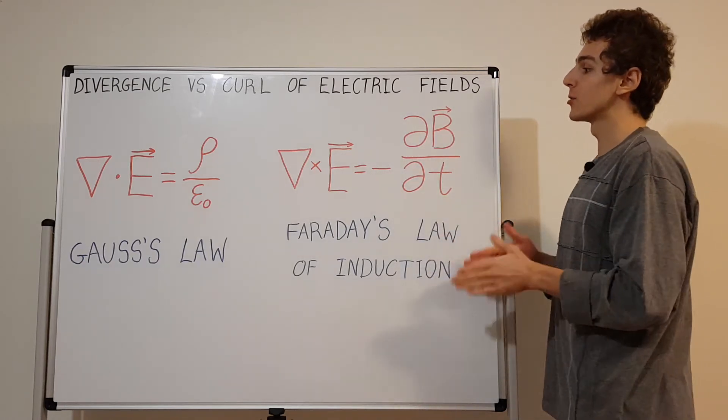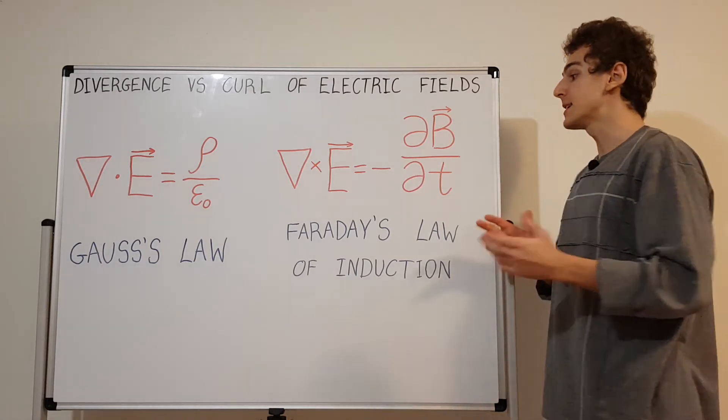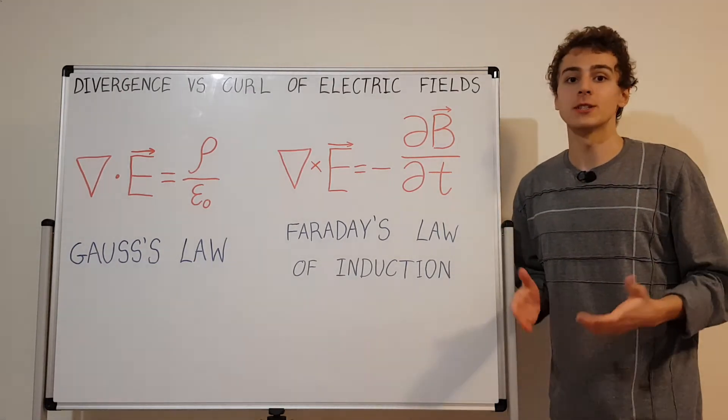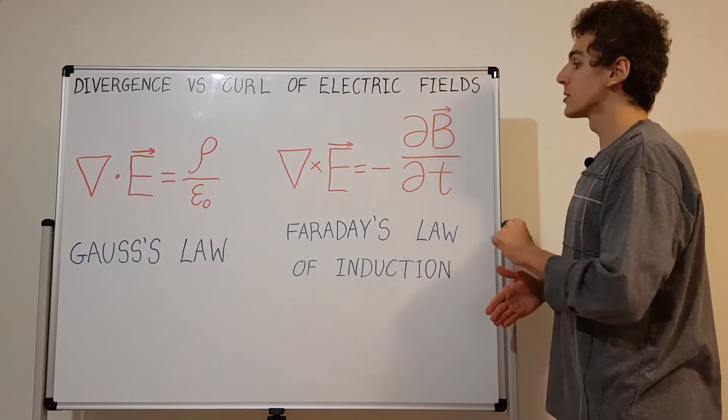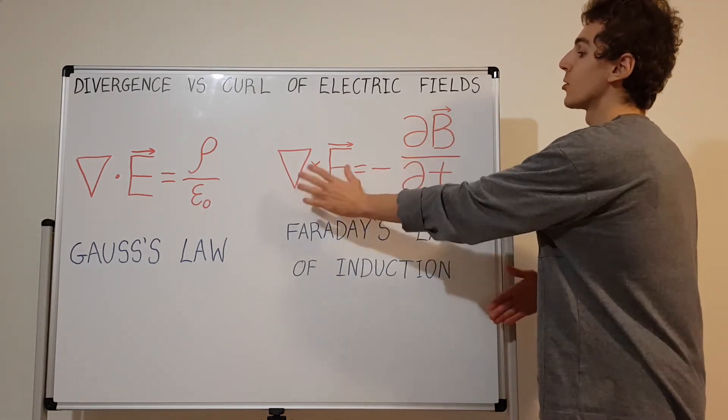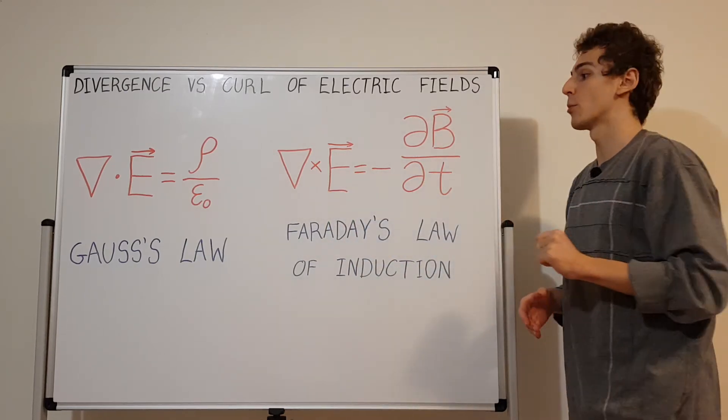If you want to set the curl equal to zero, you have to have a constant magnetic field. That's actually applicable in magnetostatics. In magnetostatics you have constant magnetic fields and all this curl is actually going to disappear. You're going to have a curl of zero, and that's a nice property to work with.